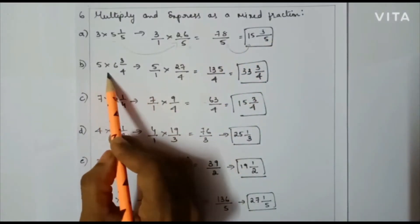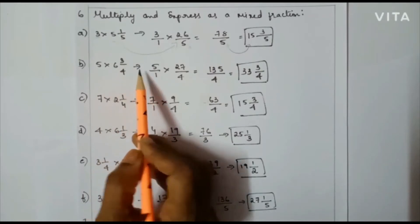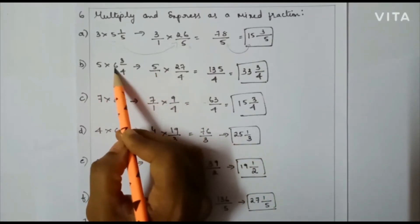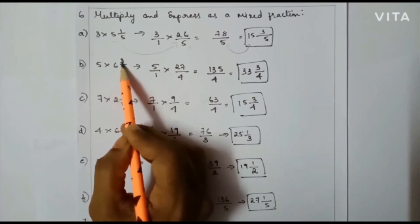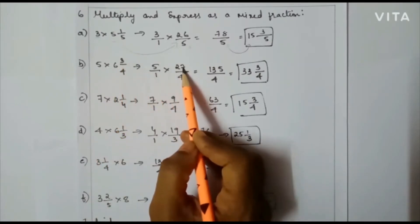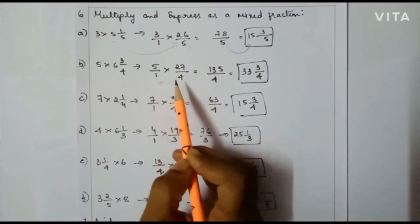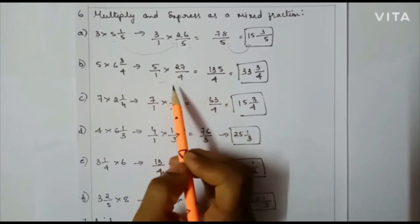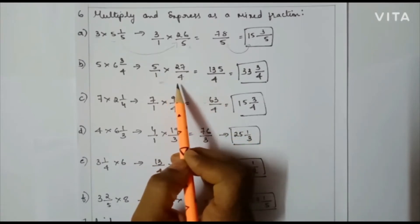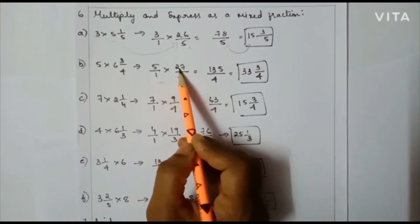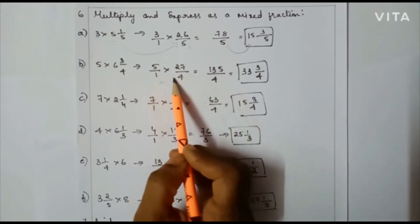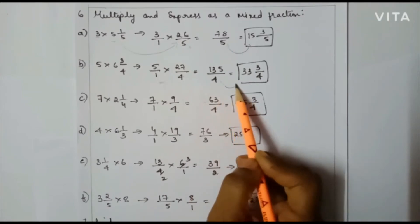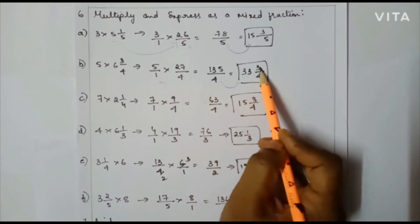Next one: 5 × 6(3/4). That is 5/1 × (4×6=24, plus 3 = 27)/4, so 27/4. We have 5/1 × 27/4. I can't cancel here. So 5 × 27 = 135, and 1 × 4 = 4. It is an improper fraction. Converting to a mixed fraction gives 33 and 3/4.